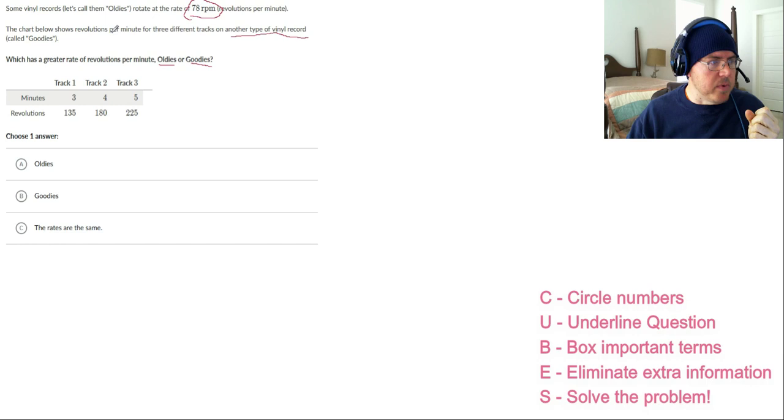So the chart below shows revolutions per minute of three different tracks on another type of vinyl record called goodies. So here's how I digest this. When it says revolutions per minute, the per is indicating how the fractions would be like. So that's 78 per one minute. That is the revolutions of an oldie.